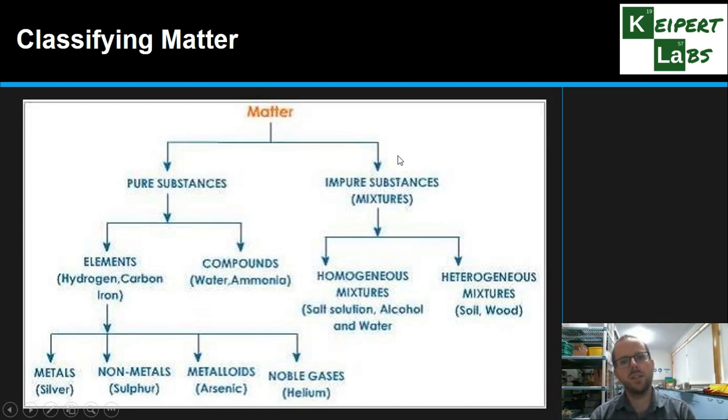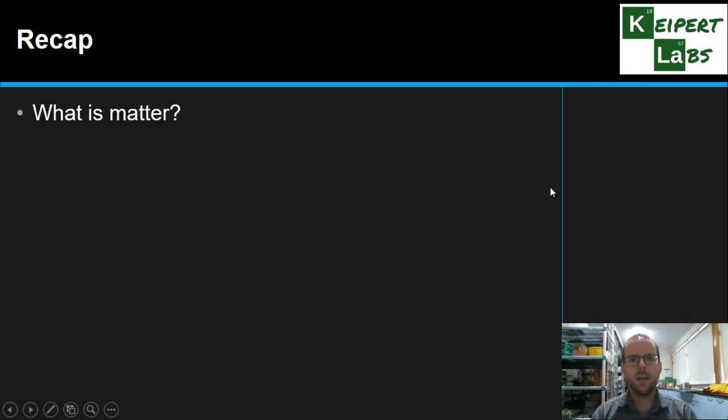And then in our pure substances, this is kind of what we can classify a little bit more deeply, is that, you know, is that particle made up of smaller bits that joined in a certain ways, or is it all the same type of bit? And then our mixtures, our homogeneous and our heterogeneous examples, depending on how evenly mixed it is.